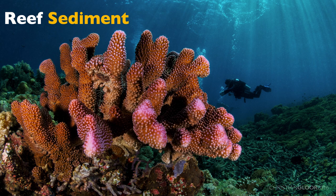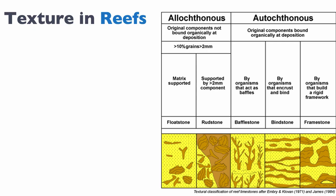Dunham is a great classification, but it's based on thin sections. And if you work on reefs, you know that some of those reef grains can be extremely large. Embry and Cloven in the 70s worked on reefs and noticed that the Dunham classification was very powerful, but not so useful in reefs because everything they looked at was coarser than what is typically classified in the Dunham texture. So they came up with an alternative classification known as the Embry and Cloven classification from 1971.